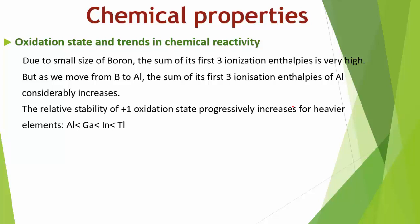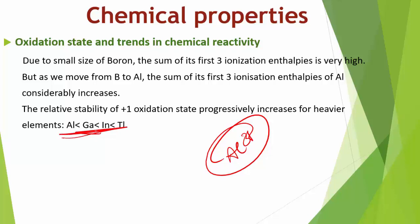As we move from boron to aluminium down the group, the sum of the first three ionization enthalpies decreases considerably. For gallium, indium, and thallium, the D and F orbitals have less shielding effect, so the increased effective nuclear charge holds the NS electrons tightly, restricting their participation in bonding. Both +1 and +3 oxidation states are seen for gallium, indium, and thallium.